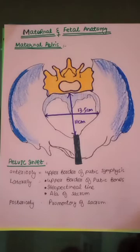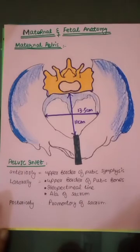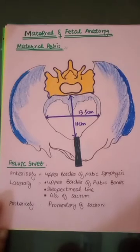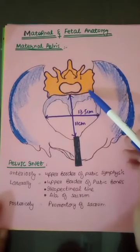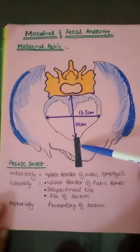Starting with maternal and fetal anatomy: the female pelvis, in relation to labor, is divided into the pelvic inlet, pelvic mid-cavity, and the pelvic outlet. Looking at this diagram, we can identify the sacrum, ala of sacrum, ileum, pubic bone, ischium, and the pubic symphysis.